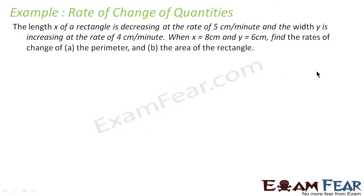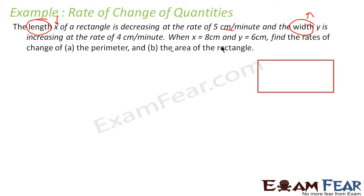Let us take one more example. The question says: the length of a rectangle is decreasing at some rate and the width is increasing — both length and width are variable — in centimetres per minute. We are given that x = 8 and y = 6. In that case, we have to find the rate of change of perimeter and the rate of change of area of the rectangle. This is my rectangle — length is x and width is y — and the new rectangle has dimensions x + Δx and y + Δy.